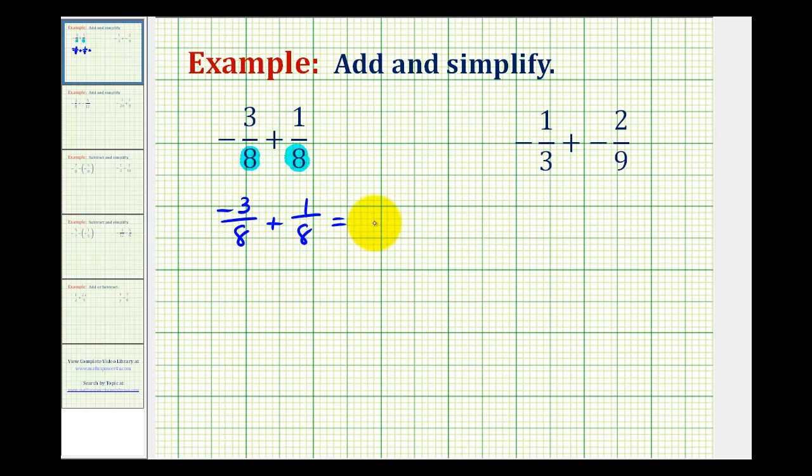So when we add these, the denominator is going to stay the same, and now we add the numerators. So we have negative three plus one, which would be negative two. But this fraction does simplify because the numerator and denominator do share a common factor of two.